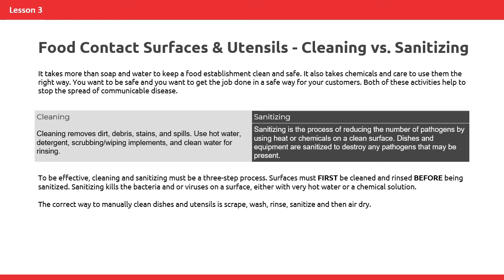Sanitizing is the process of reducing the number of pathogens by using heat or chemicals on a clean surface. Dishes and equipment are sanitized to destroy any pathogens that may be present. To be effective, cleaning and sanitizing must be a three-step process. Surfaces must first be cleaned and rinsed before being sanitized. Sanitizing kills the bacteria and or viruses on a surface, either with very hot water or a chemical solution. The correct way to manually clean dishes and utensils is: pre-scrape, wash, rinse, sanitize, and then air dry.